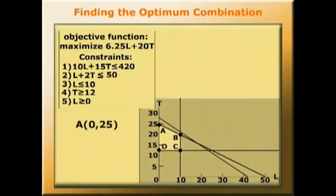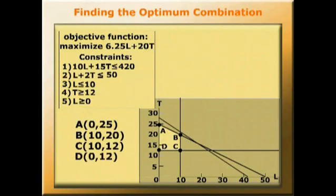And we've labelled as A, B, C and D the points which border the feasible region.